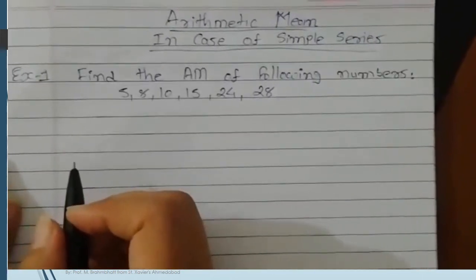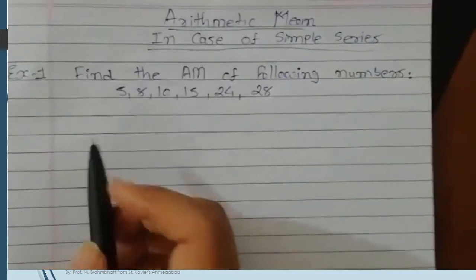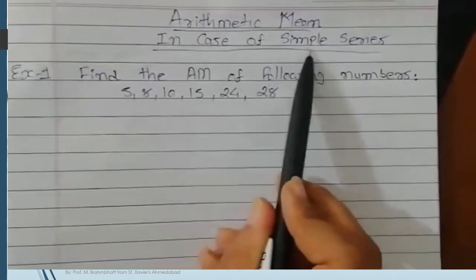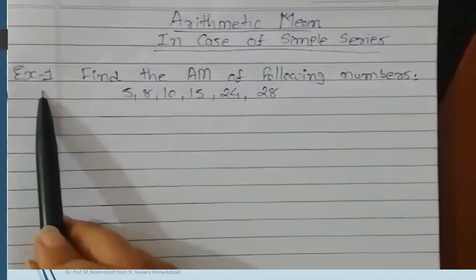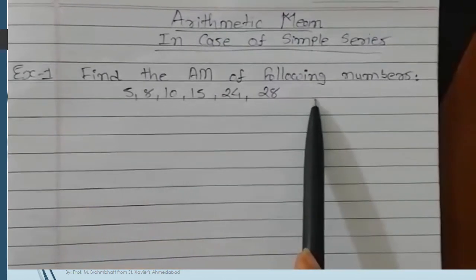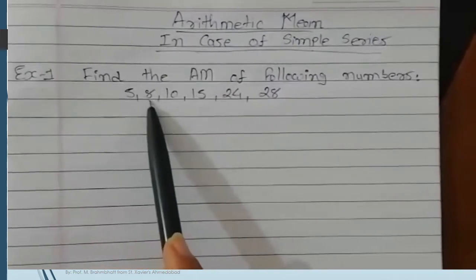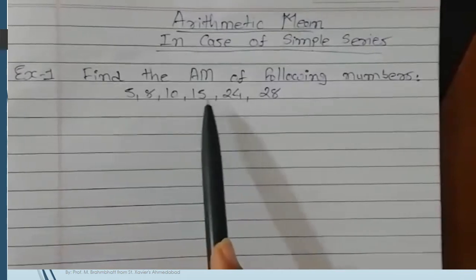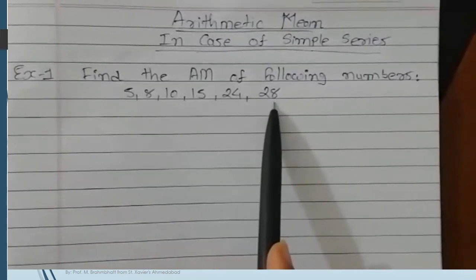Let's see how to find arithmetic mean in case of simple series. The example number 1: find the AM of following numbers: 5, 8, 10, 15, 24, and 28.